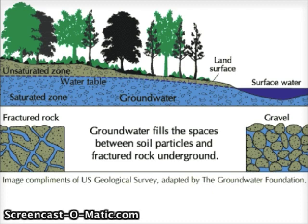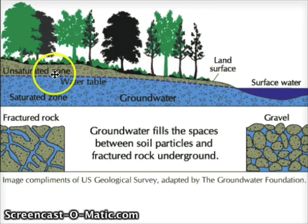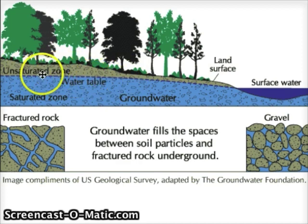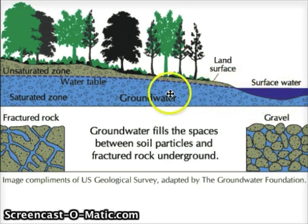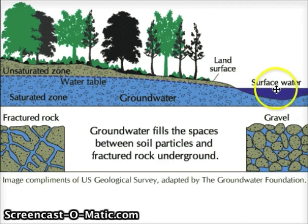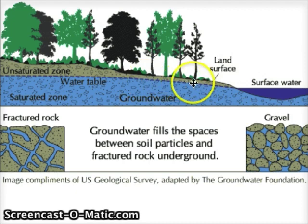Looking at this slide, you can see groundwater underneath the ground. You have the unsaturated zone, which is the area not saturated with water. The bottom of the unsaturated zone — or the top of the saturated zone — is known as the water table. Here you can see the connection between surface water and groundwater. A lot of times the top of your lakes, rivers, and streams is at the water table, but it's not considered the water table because it's not underground.